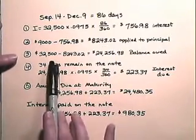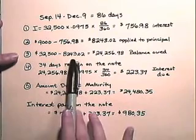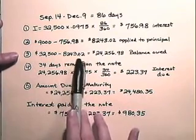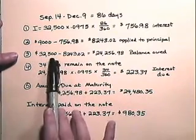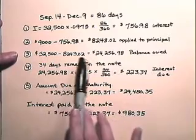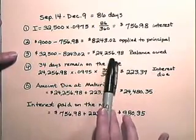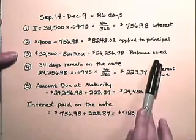Step 3, we subtract $8,243.02 from the $32,500 value of the note and get $24,256.98 as our balance owed.